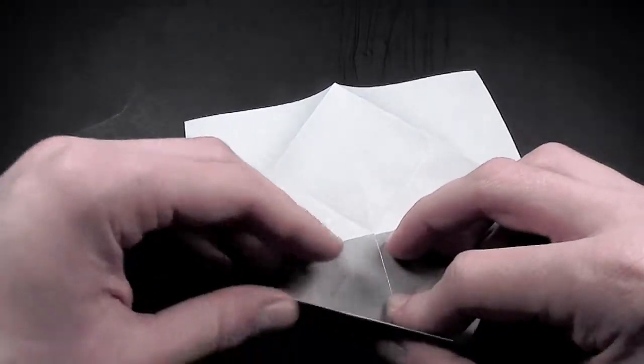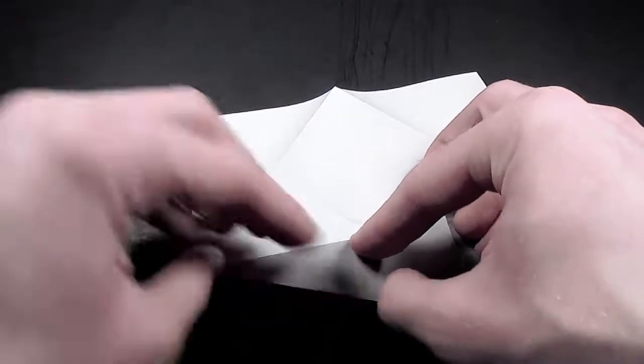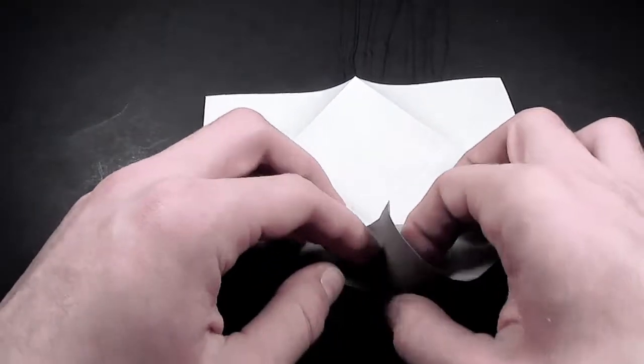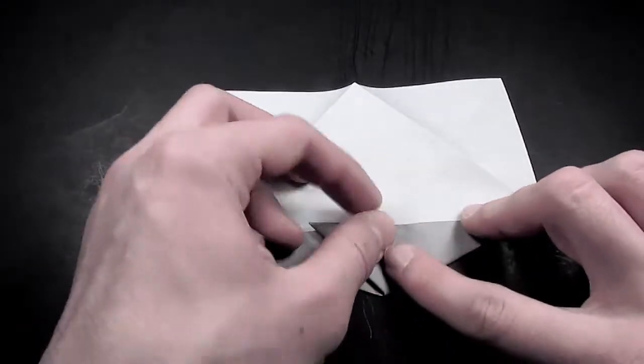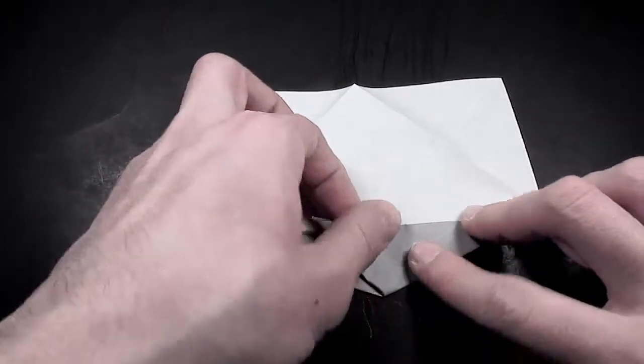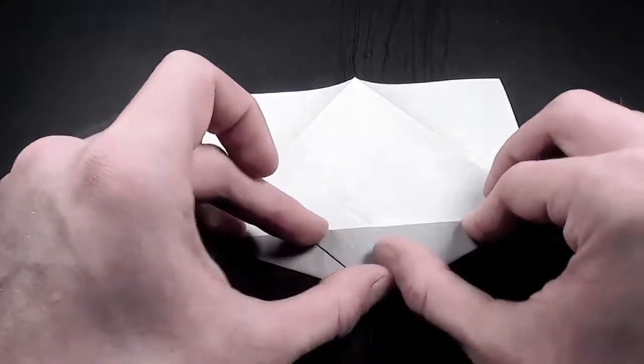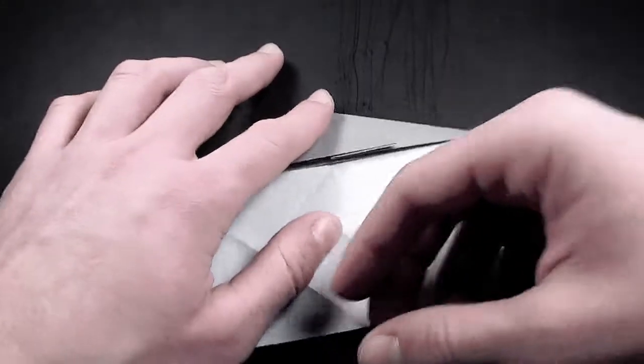Then, let's do the same thing on the left side. Fold this edge up to the top. And then, let's fold this flap over to the left, and remake the other fold. And make sure everything is flat. Then, let's rotate the paper around.